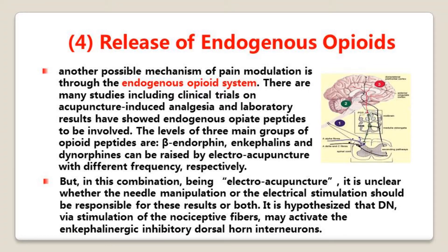Another possible mechanism of pain modulation is through the endogenous opiate system. There are many studies including clinical trials on acupuncture-induced analgesia, and laboratory results have shown endogenous opiate peptides involved. The levels of the three main groups of opiate peptides — beta-endorphins, enkephalins, and dynorphins — can be raised by electroacupuncture with different frequencies respectively. But in the combination of electroacupuncture, it is unclear whether the needle manipulation or the electrical stimulation should be responsible for this response, or both. It is hypothesized that dry needling, via stimulation of nociceptive fibers, may activate the enkephalinergic inhibitory dorsal horn interneurons.